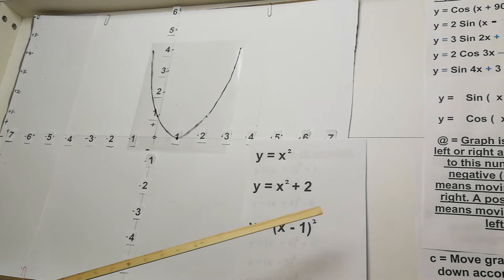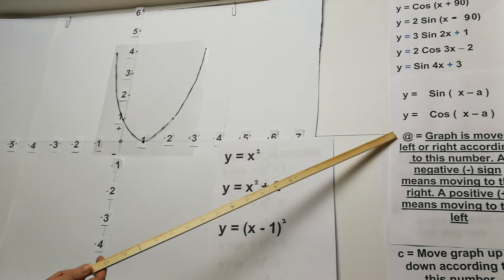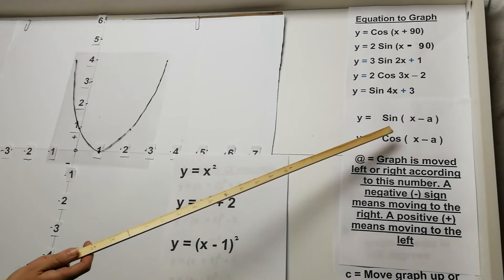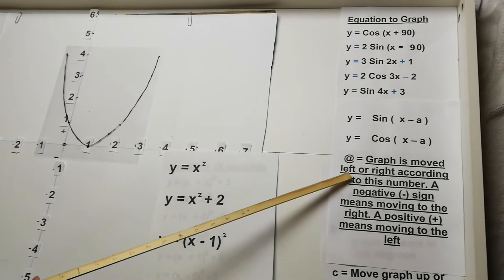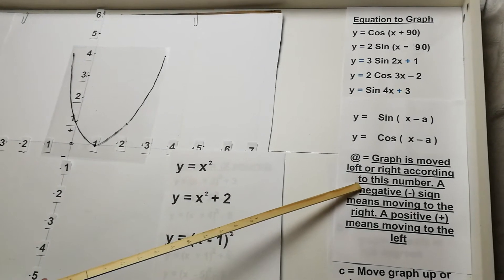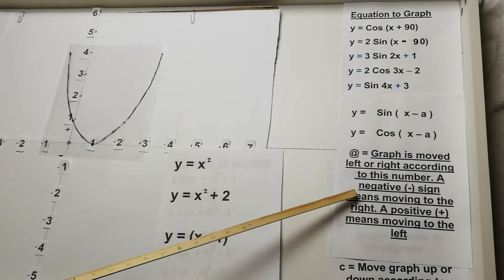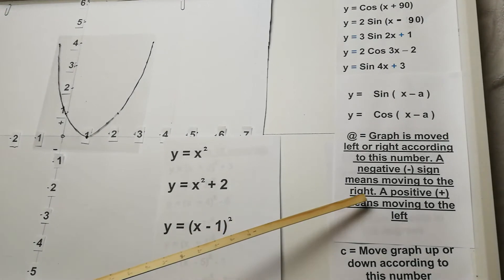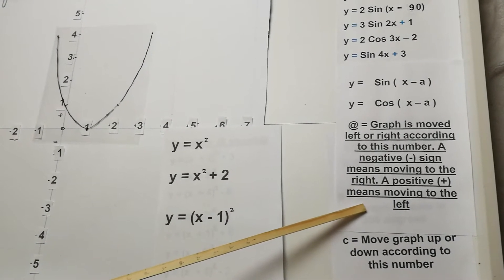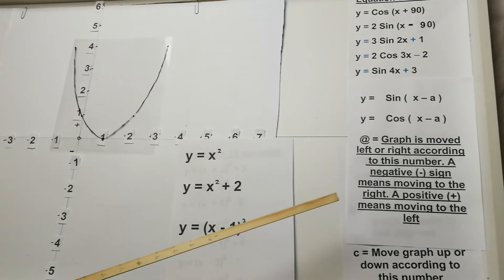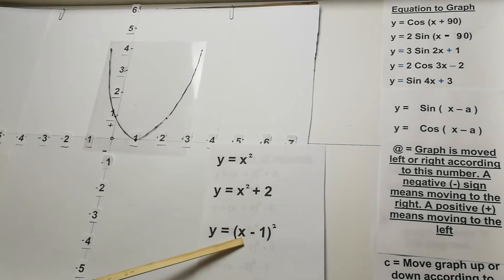When we look at here, some of the hints and tips we had for the sin and cosine graphs, when we had the x minus in the bracket, the graph is moved to the left or right according to this number. A negative sign means moving to the right. A positive sign means moving to the left. So we're going to keep this in mind in our parabola equations.